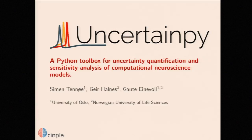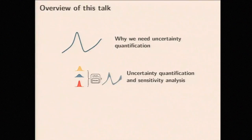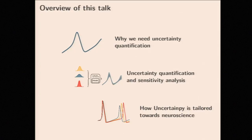My name is Simon and I'm here to present a Python toolbox that we have recently developed at the University of Oslo for performing uncertainty modification and sensitivity analysis on computational neuroscience models. To give a brief overview: first I will motivate why we need to perform uncertainty quantifications, then talk about what we get from an uncertainty quantification and what sensitivity analysis is, and end with a specific problem that crops up in neuroscience and how UncertainPy solves it.